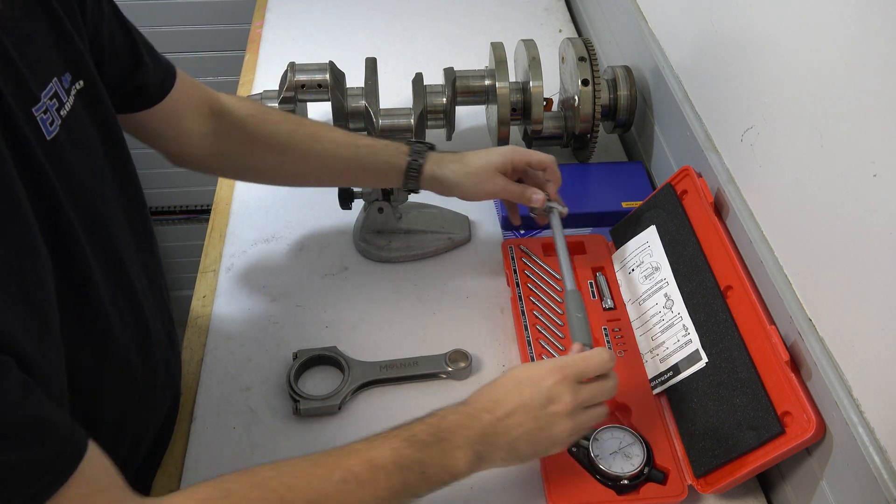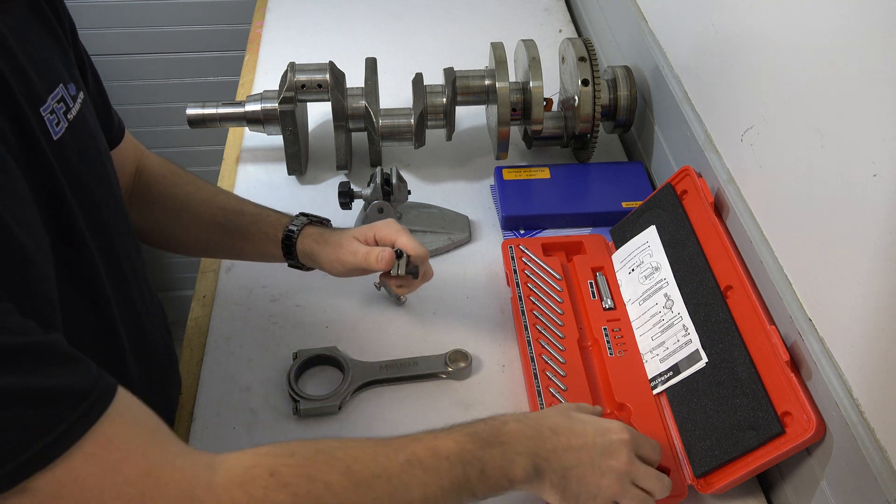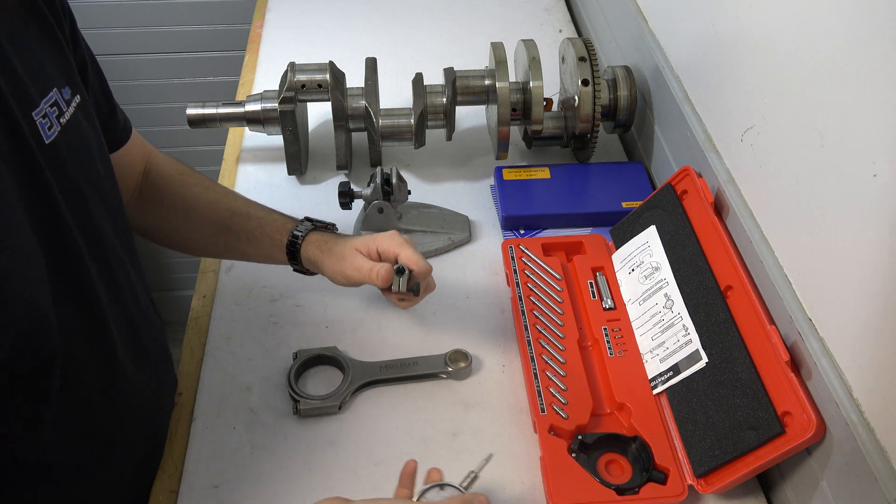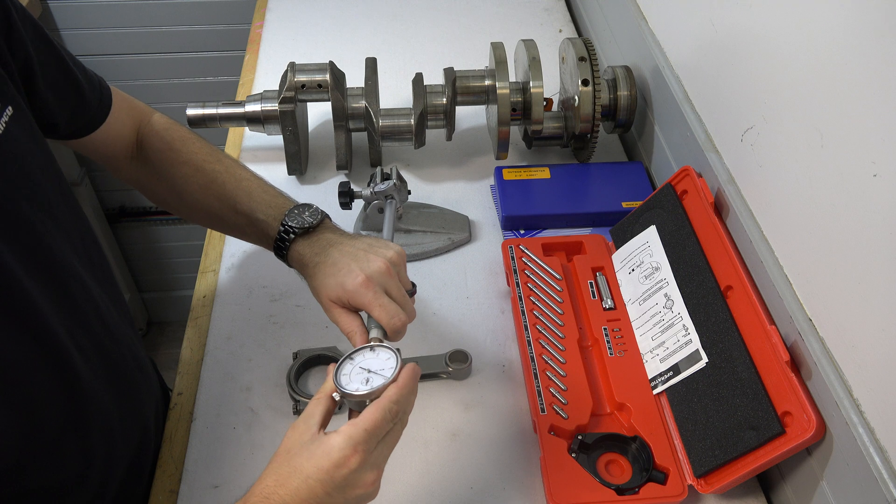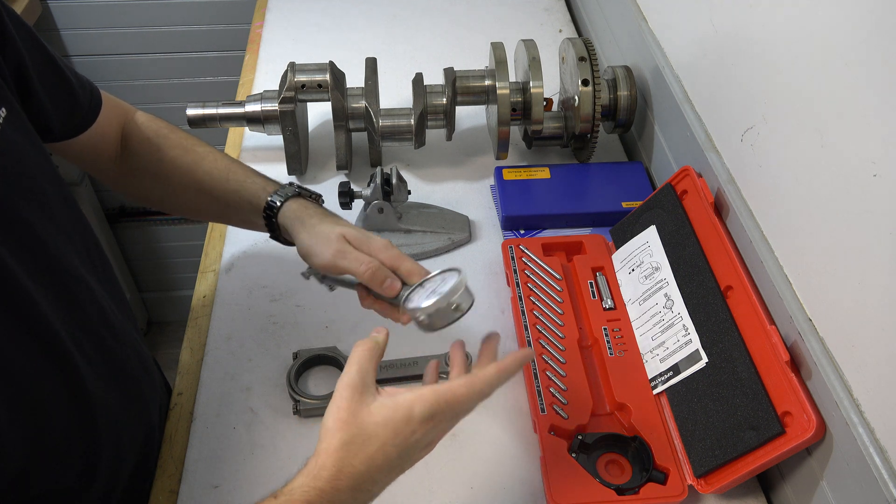So when you open up this box, you can pull out the main body of our dial bore gauge here and insert our indicator in and what we're looking for.